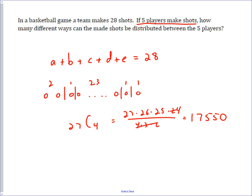It's a very common type of problem called sticks and stones. If every variable has to be one or more, then the first number is always one less than the number of things you're distributing, and the second number is always one less than the number of people or things you're distributing to.